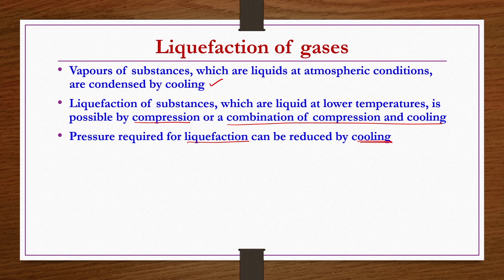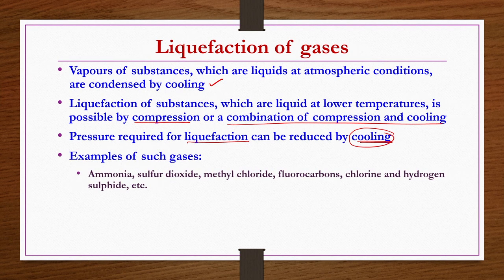Liquefaction actually occurs by increasing the pressure — high pressure must be applied to a gas so that it can be liquefied, and that requirement of high pressure may be reduced if the process is accompanied by cooling. Some examples of such gases are ammonia, sulphur dioxide, methyl chloride, fluorocarbons, chlorine, and hydrogen sulphide.